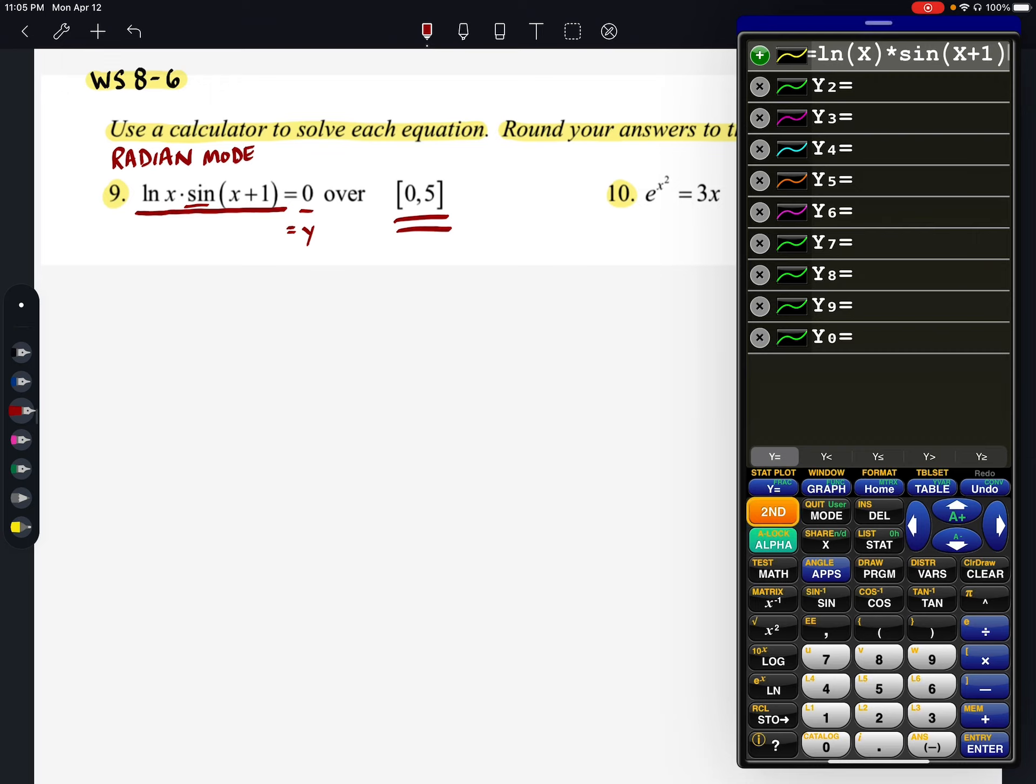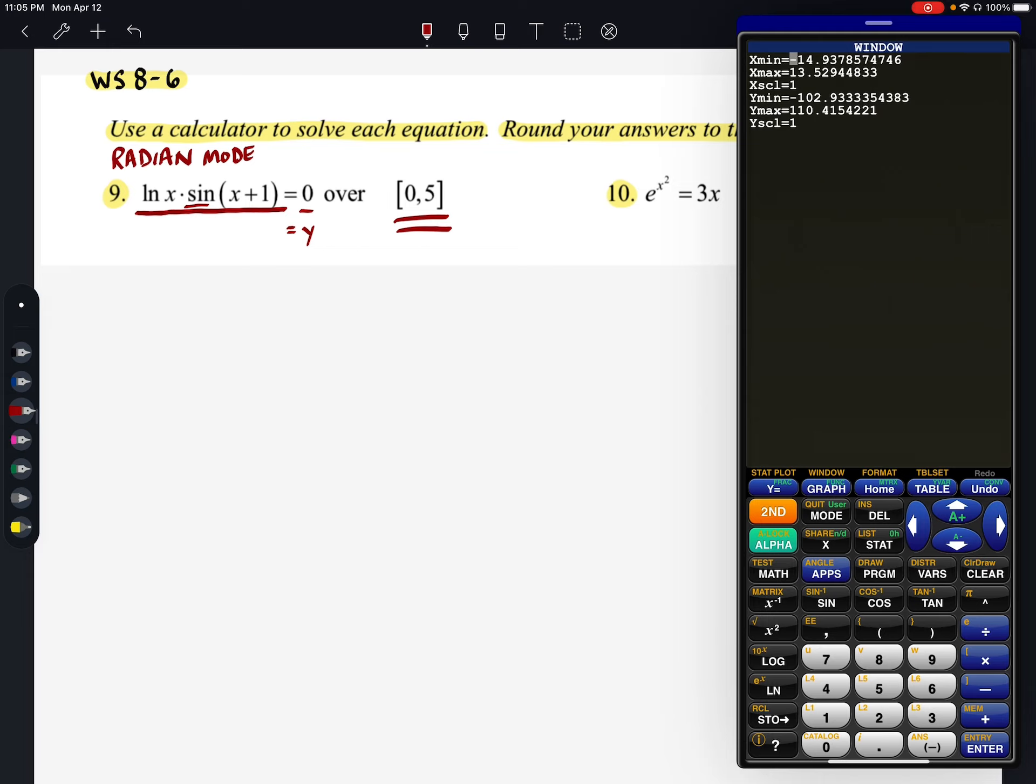So we're going to go into our window option. And I want to make my X min zero, my X max five. As for our Y values, right, since we're focusing on the X axis. OK, right. We really don't have to go that high on these. So I'm just going to go like negative two and positive two.